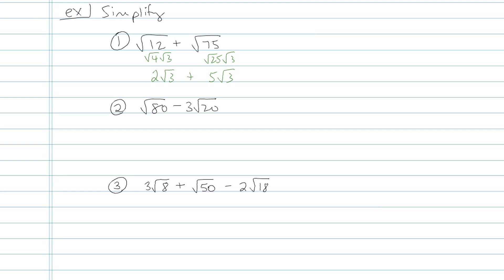So my problem now simplifies to 2 root 3 plus 5 root 3. Those numbers in my original problem didn't look like they had the same radicand, right? 12 and 75, those are different. But when I simplify it, I can see that it's really both root 3's. 2 root 3's plus 5 root 3, that's 7 root 3.